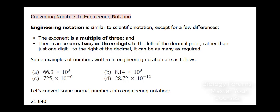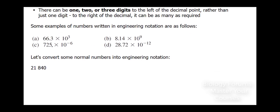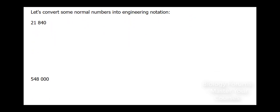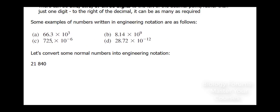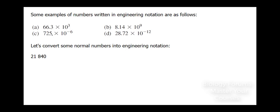So let's convert some numbers that we have below into engineering notation. The first number is 21,840. So in order to convert this number into engineering notation, we must do the following. First of all, we can start off by seeing what it would look like in scientific notation.